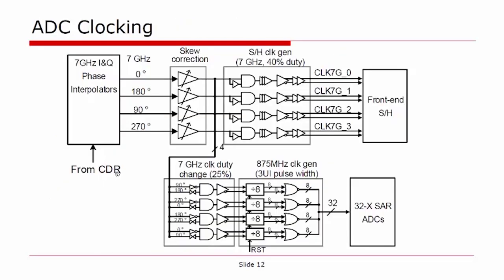The CDR controls the output phase of the phase interpolators, with a total of four phases at the PI output. Skew correction is done by adjusting the delay on each of the four phases of the PI output, ensuring the four phases of the ADC sampling clocks are equally spaced. The 7 GHz four-phase clock is also fed into four groups of divide-by-eight circuits, each group associated with one rank-1 sampling clock, resulting in a total of 32 875 MHz clocks going to the 32 instances of SAR ADCs.